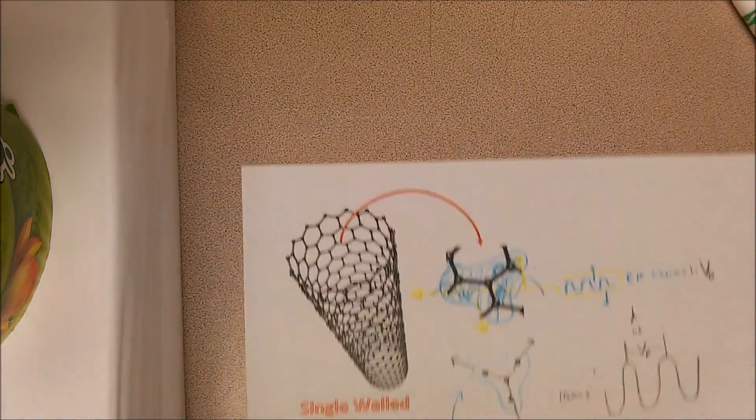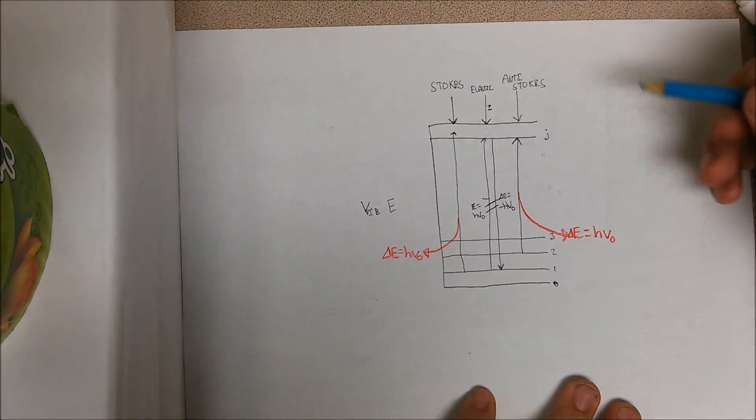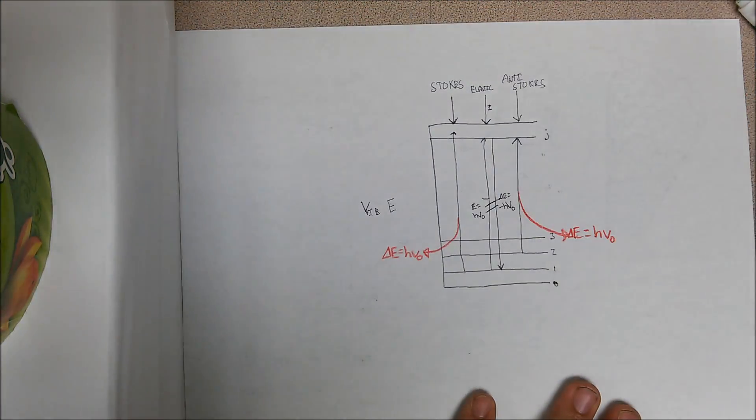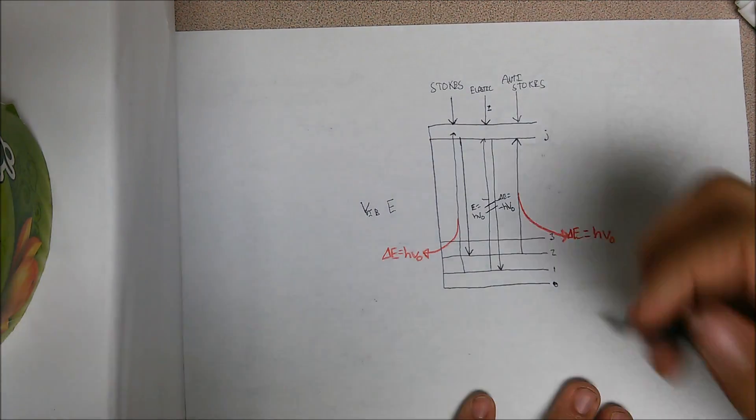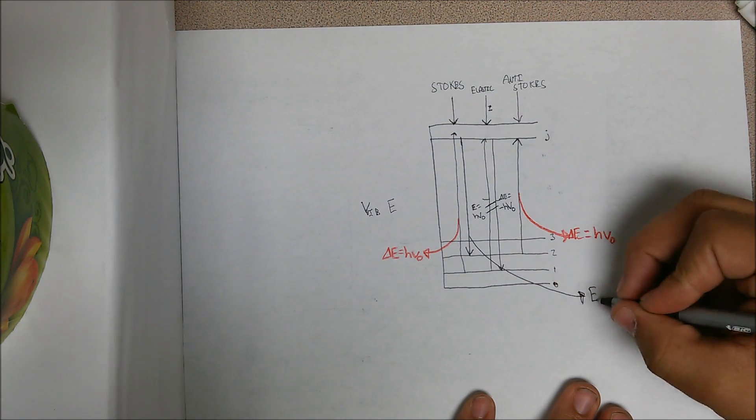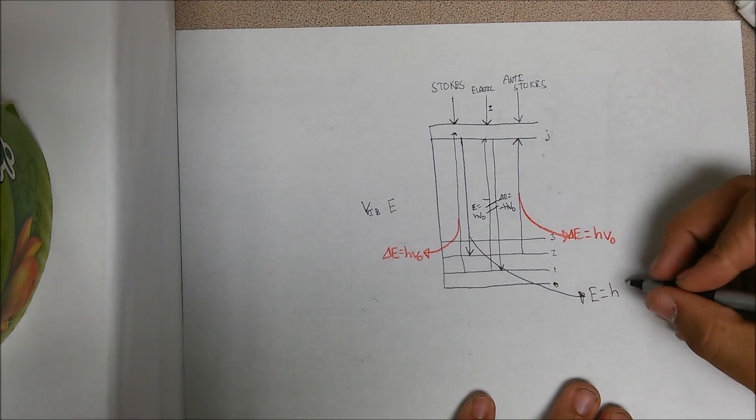So it is helpful to model this energy change with a Jablonski diagram. On the left side of this diagram, I have shown the induced energy state of the molecule, whose change equals the incident photon's frequency V0 times Planck's constant.